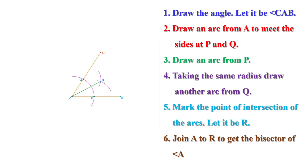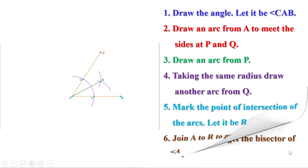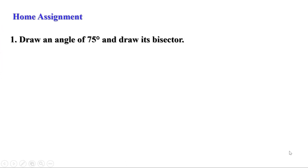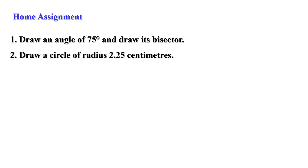Today we have learned how to draw the bisector of an angle. Now there are two homeworks. First, draw an angle of 75 degrees and draw its bisector. Second, draw a circle of radius 2.25 centimetres. Hope you have understood — do the homeworks and practice well. I will be back with another video. Till then, bye.